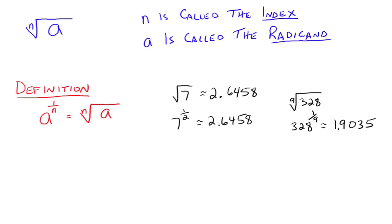There's one more definition that was actually bigger and encompasses all this stuff. a to the m over n is equal to, and there were two ways you could write it: the nth root of a, all of that raised to the m power. Notice the numerator of the fraction becomes the exponent, and the denominator is the index of your radical. Or it could be written as the nth root of your radicand raised to that m power.